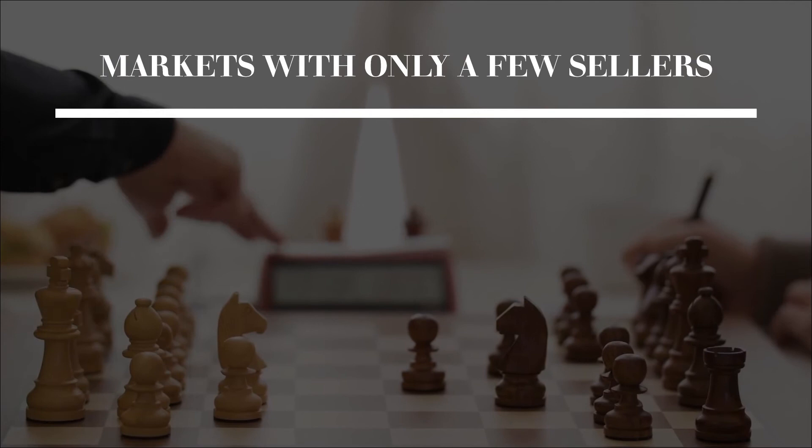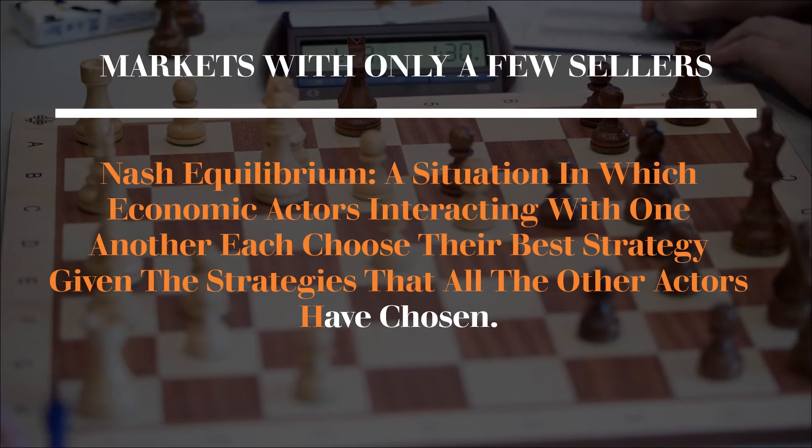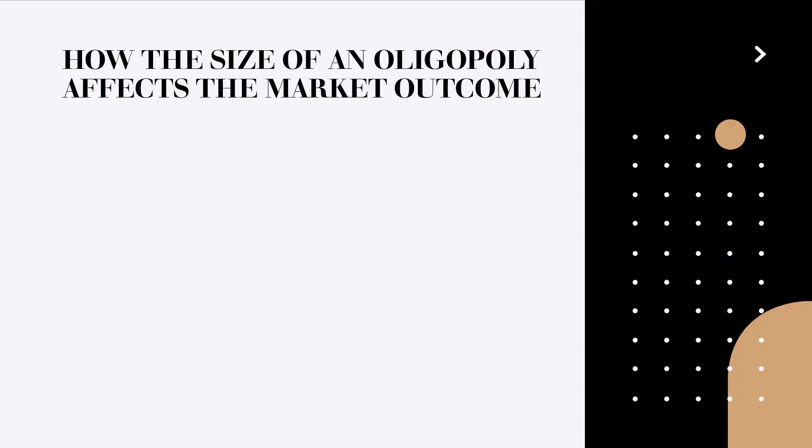40 gallons is a good example of what is called a Nash equilibrium. A Nash equilibrium is a situation in which economic actors interacting with one another each choose their best strategy given the strategies that all the other actors have chosen.